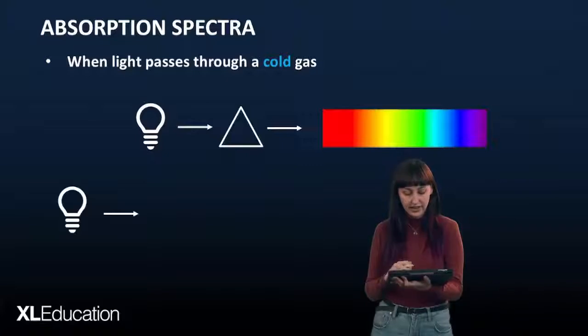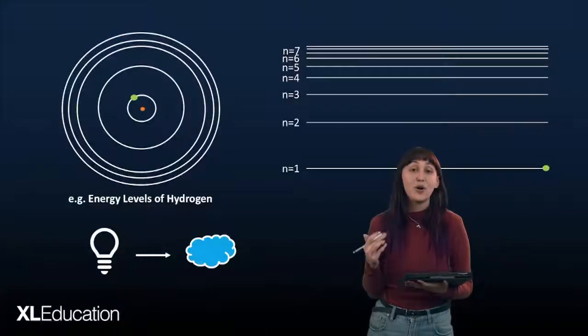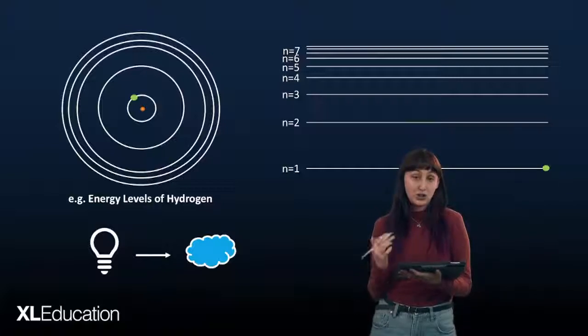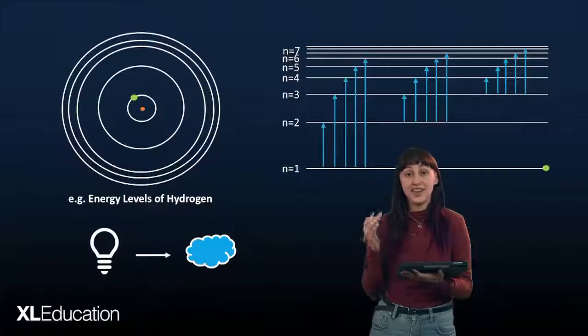If we were to take white light and pass it through a cold gas, say hydrogen, what are we going to see? If we remember with hydrogen, when the gas is heated, it gives off photons which have an energy which is the difference between two of its energy levels. Now, when white light passes through the cold gas, it will absorb photons which are equal to the difference in the energy levels.